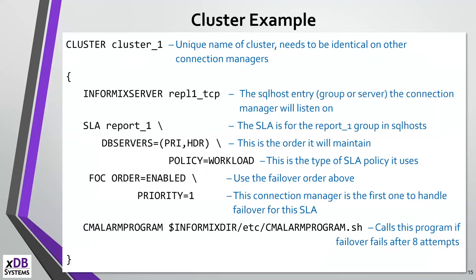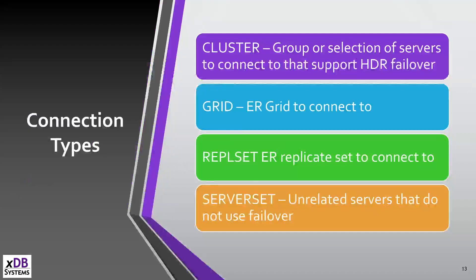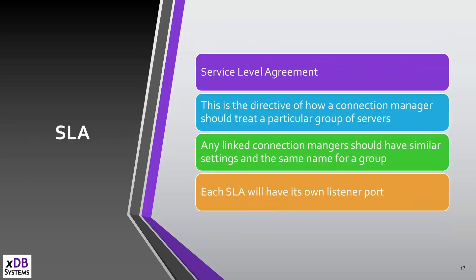Breaking down each field: the Informix server value is present for all four types — cluster, grid, REPL set, and server set — and defines what the default server to connect to is. The SLA (Service Level Agreement) is the directive for how to handle a group of servers. Linked Connection Managers need to have the same name and same information on the SLA. Each SLA — and you can have multiple SLAs for a group — needs its own listener port. Just like you can't run multiple DB server aliases on the same port, you can't run multiple SLAs on the same port.